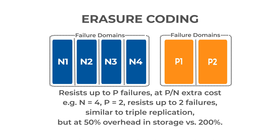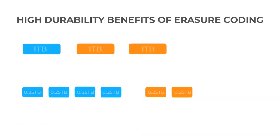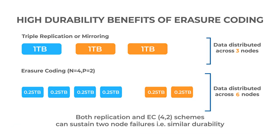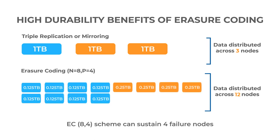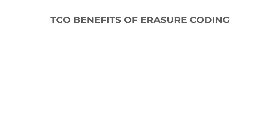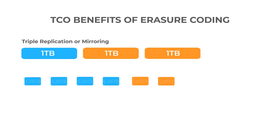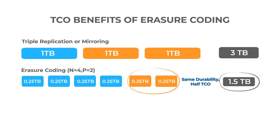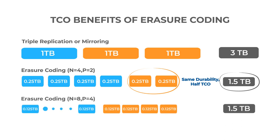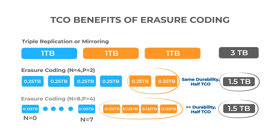Let's look at a quantitative example. This example shows how both schemes can sustain two node failures and achieve similar durability metrics. And in a scheme where P equals 4, the system can sustain four failure nodes. Compare the TCO benefits: with triple replication, your system can sustain two failure nodes. With erasure coding where N is 4 and P is 2, you can sustain two failure nodes and achieve similar high durability, but at half the storage capacity versus replication. With erasure coding where N is 8 and P is 4, you achieve significantly higher durability at half the storage capacity versus replication.